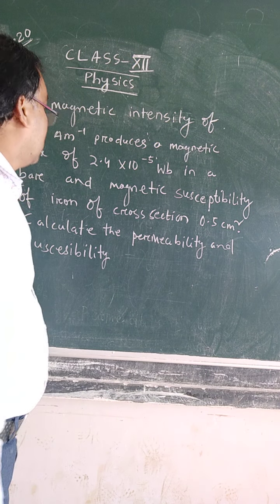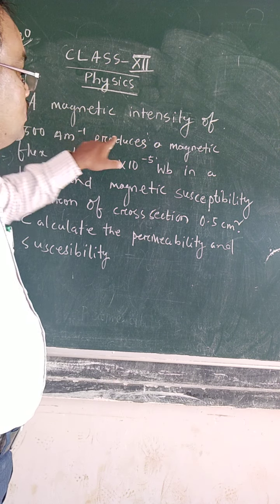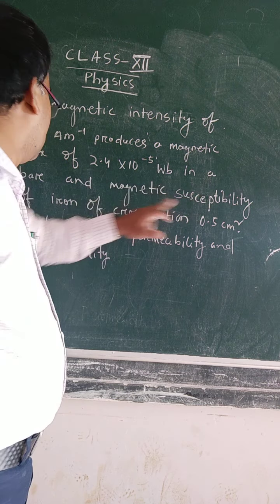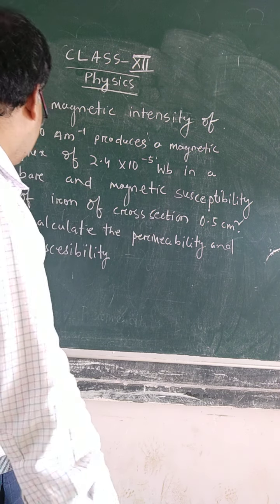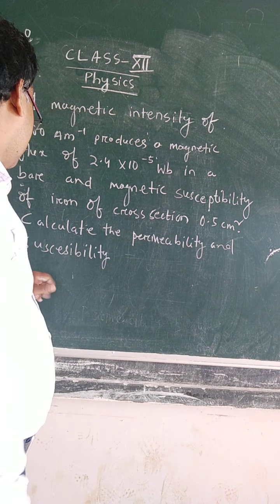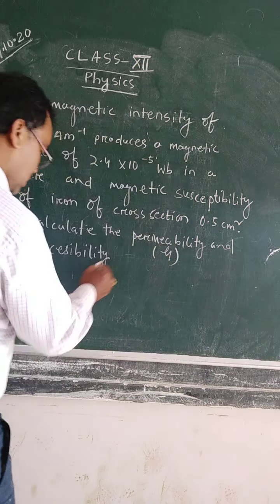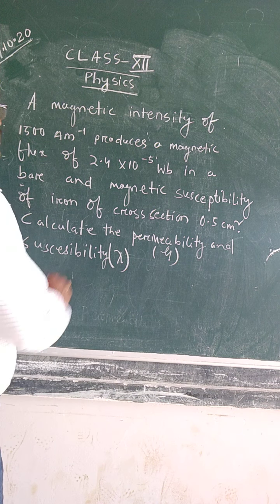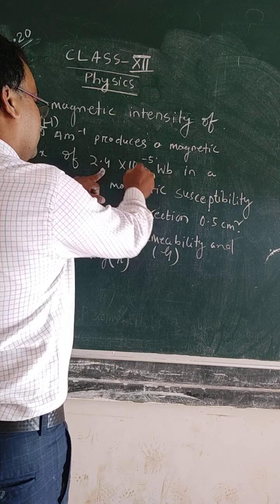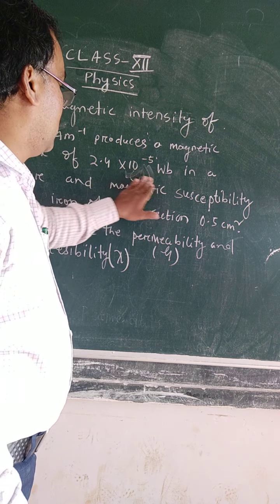This is a numerical problem. A magnetic intensity of 1500 ampere per meter produces a magnetic flux of 2.4 into 10 to the power minus 5 Weber in a bar. We need to calculate the permeability and magnetic susceptibility of iron of given cross-section.